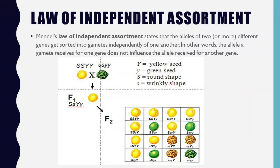This takes us to the second law: the law of independent assortment. This says that the alleles of two or more different genes are sorted into gametes independently of one another. In other words, the allele a gamete receives for one gene does not influence the allele received for another gene.